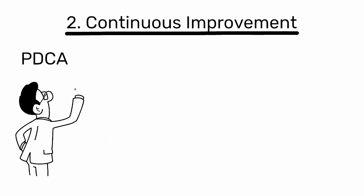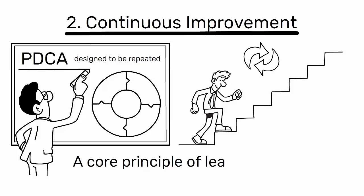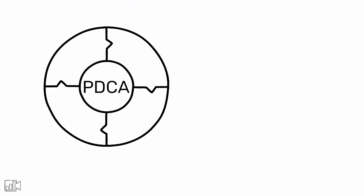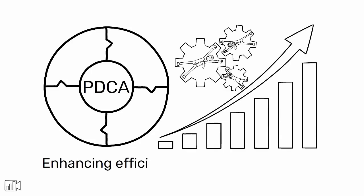2. Continuous Improvement. PDCA is a cyclical process, meaning it's designed to be repeated. This encourages continuous improvement, a core principle of lean manufacturing. By continually cycling through PDCA, engineers can incrementally improve processes, enhancing efficiency and quality over time.